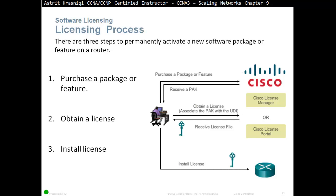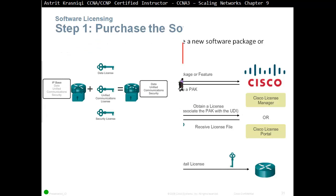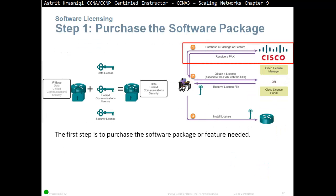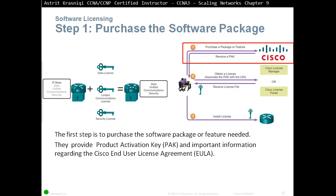So the first step is to purchase a software package. You go to the Cisco website and purchase the package or features you want — security, unified communication, or data. They then provide the Product Activation Key, or PAK key, along with important information regarding the Cisco End User License Agreement.